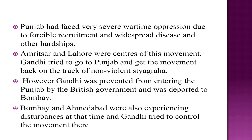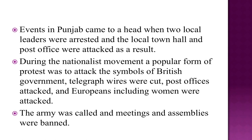Bombay and Ahmedabad were also experiencing disturbances at that time and Gandhi tried to control the movement there. Events in Punjab came to a head when two local leaders were attacked and arrested, and the local town hall and post office were attacked as a result. During the nationalist movement, a popular form of protest was to attack the symbols of British government — telegraph wires were cut off, post offices attacked, and Europeans, including women, were also attacked. The army was called and meetings and assemblies were banned.